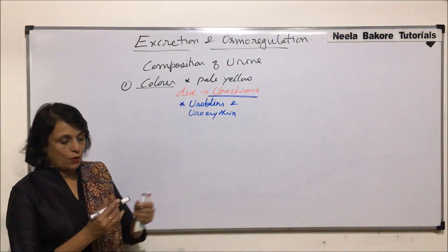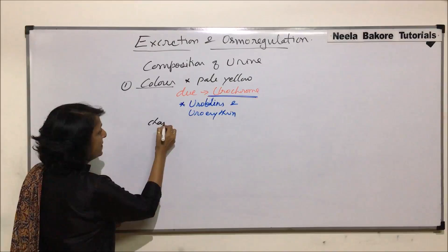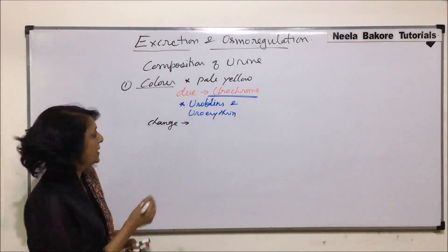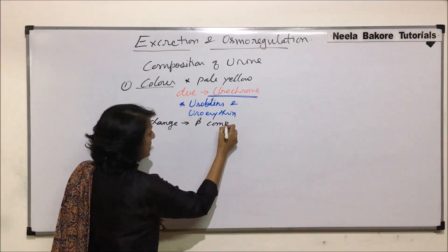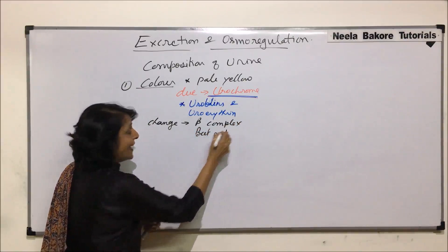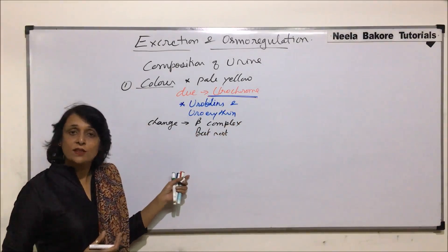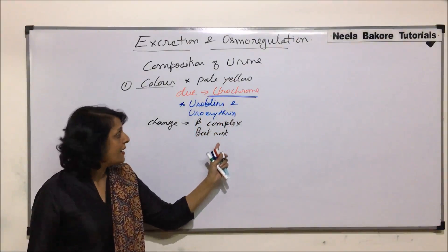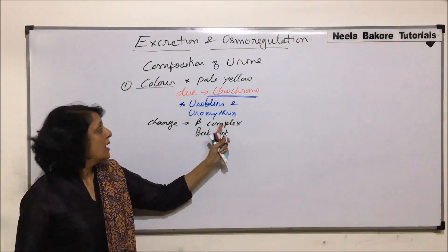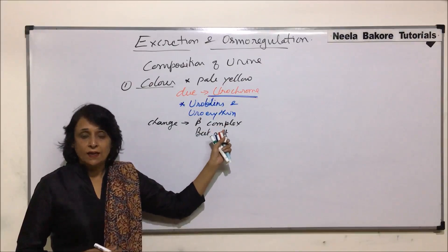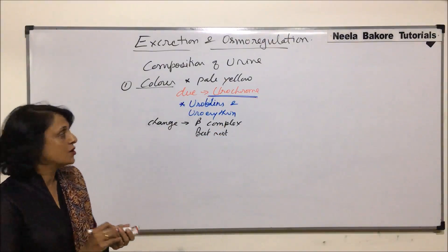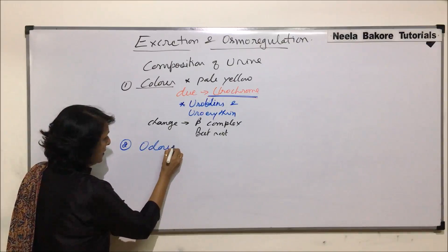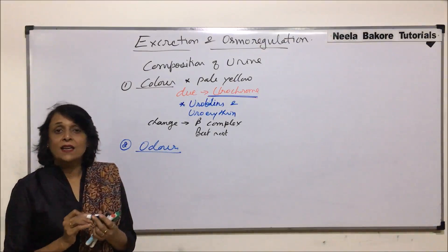Color change is normally seen when a person takes certain drugs — for example, B-complex. When B-complex or beetroot is consumed, the color of urine changes. Some other drugs can also cause this. So normally it is pale yellow due to urochrome, but the color may change due to certain chemicals from B-complex, beetroot, or other drugs.